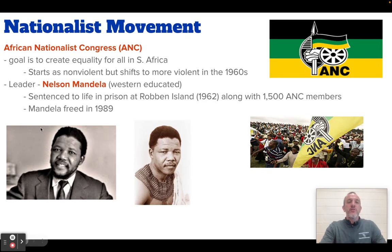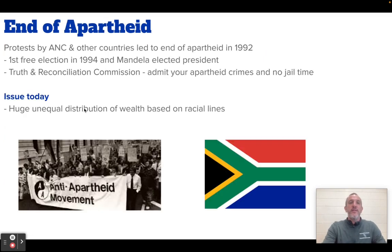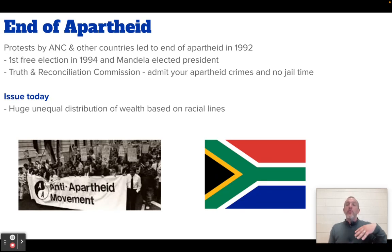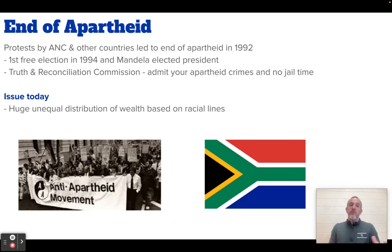Mandela is the leader of the movement. He is freed in 1989. Because of protests and other countries putting pressure on South Africa, they end the apartheid system in 1992, and they hold their first free election in 1994 — free election meaning everyone can vote. Mandela is elected the first president of this new, post-apartheid government.